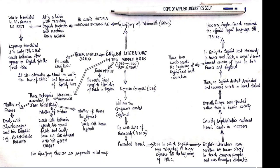When you come to the Matter of Britain, we give this category more importance since we are students of English literature. The English romance talks about Arthurian legends — King Arthur and the legends associated with him, his Round Table, and the twelve knights who were there with him. There is also the concept of courtly love in this category.